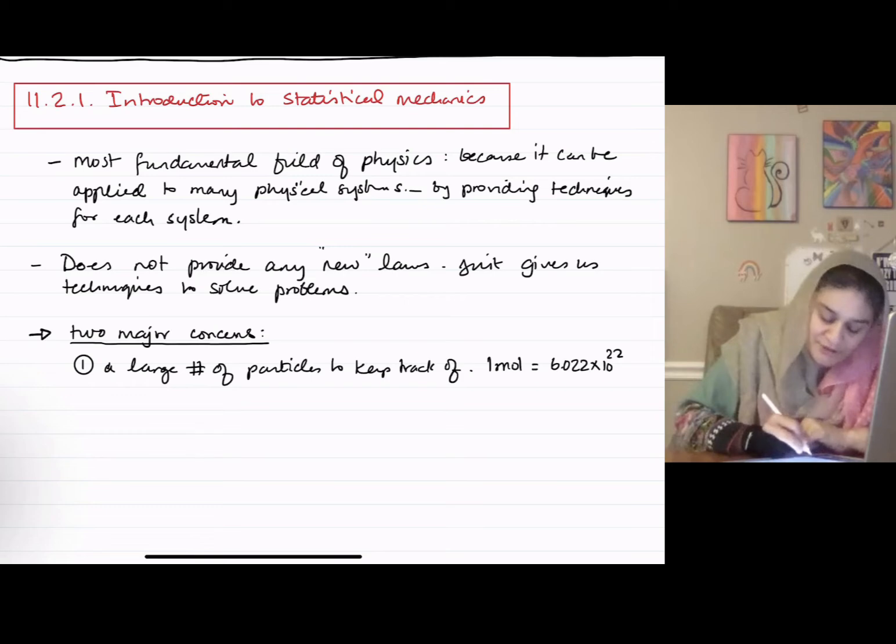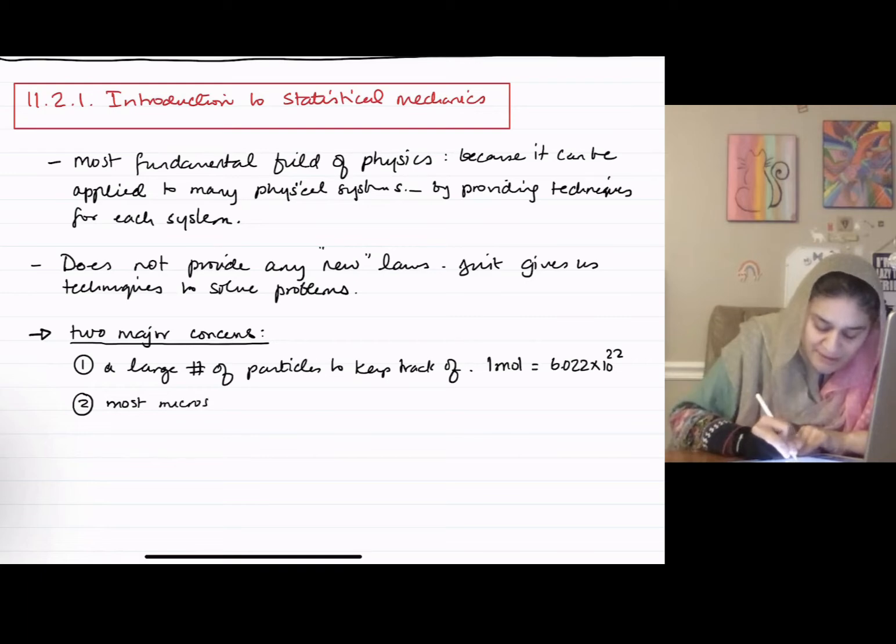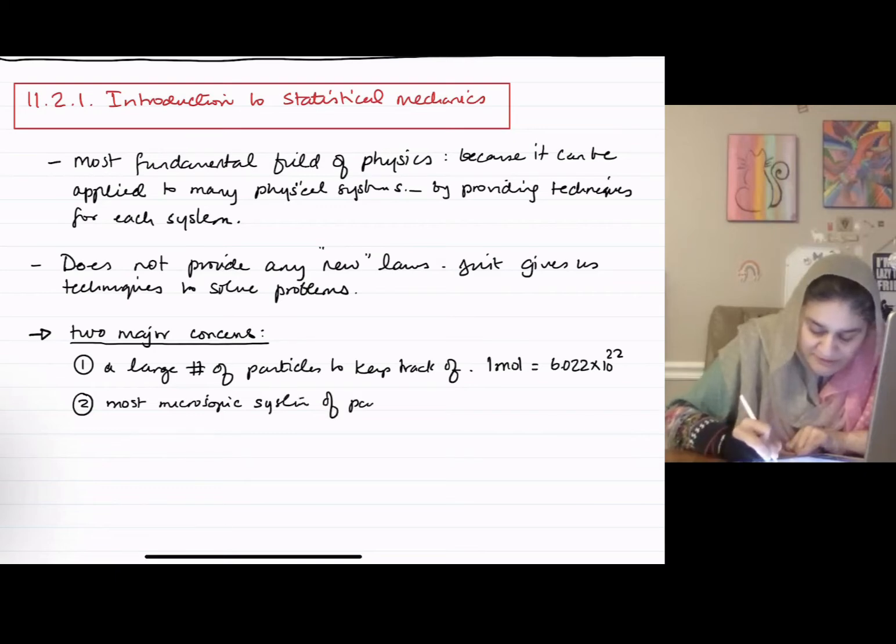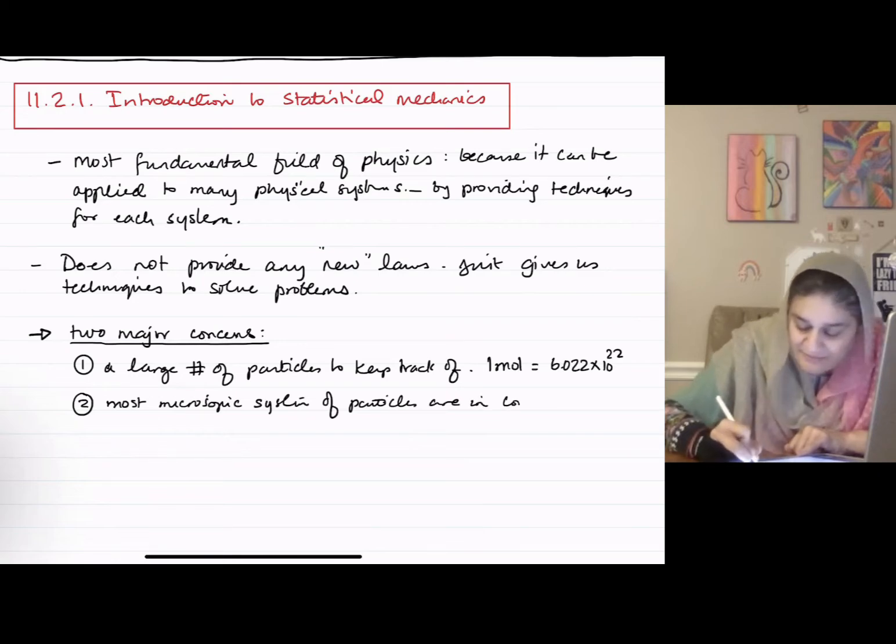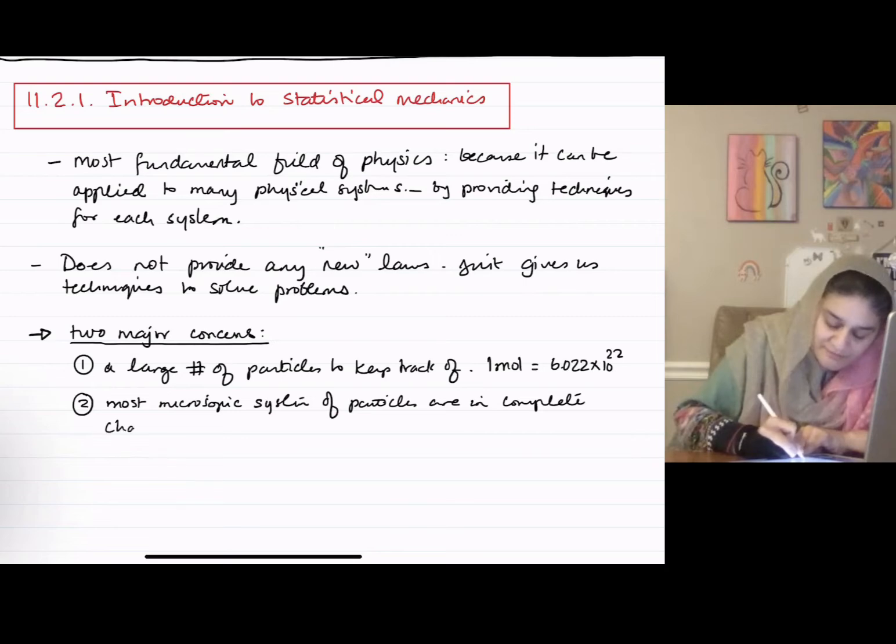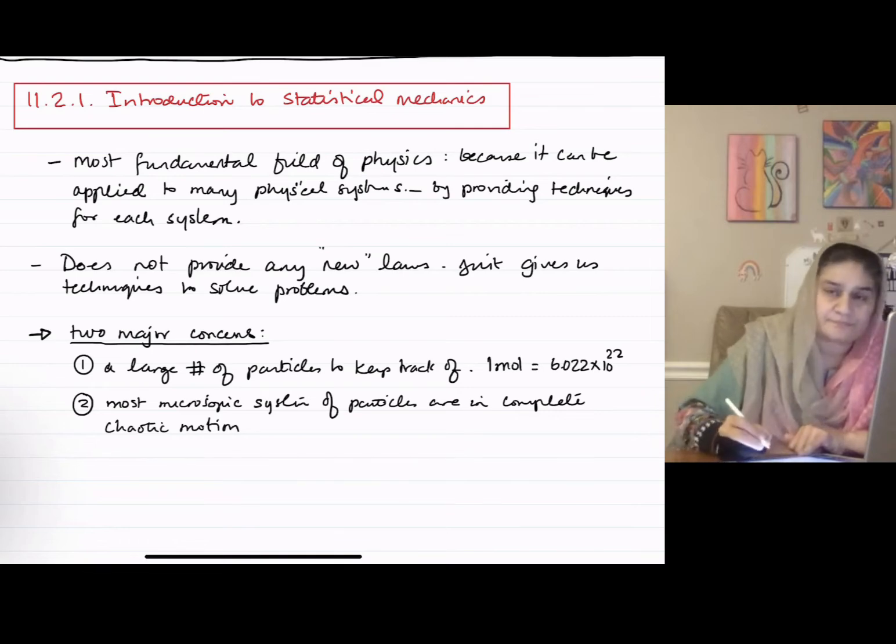And number two, most microscopic systems of particles are in complete chaotic motion, which means they are unpredictable.